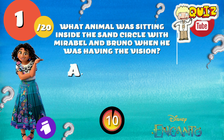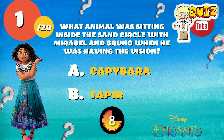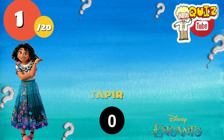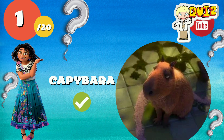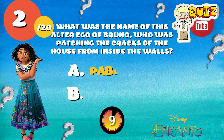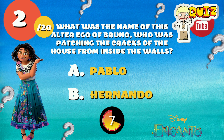What animal was sitting inside the sand circle with Mirabel and Bruno when he was having the vision? The right answer is... What was the name of the alter ego of Bruno,